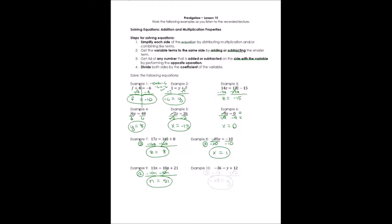Example number 10, I have something added to my variable term. So I'm going to have to begin with step number 3. Step number 3 says get rid of any number that's added or subtracted. I'm going to get rid of this positive 12 by subtracting 12 from both sides. Now, negative 36 minus 12, I'll need to add those terms together and keep the sign. On the right, 12 minus 12 becomes 0. y plus 0 is just plain y. So I have y all alone and it is equal to 48. And that is my answer.